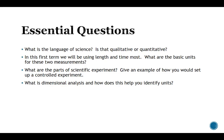Number three, what are the parts of the scientific experiment and give an example of how you would set up a controlled experiment? And lastly, what is dimensional analysis? Or you might have known it as factor canceling or unit labeling or something along those lines where we go ahead and make sure we identify the correct units.